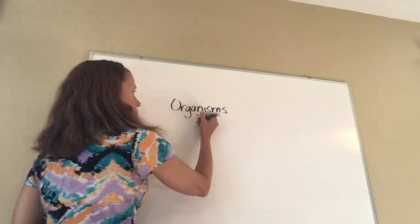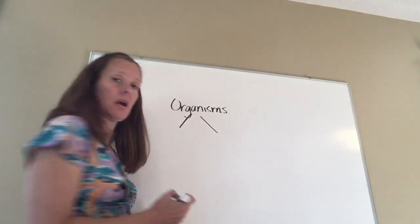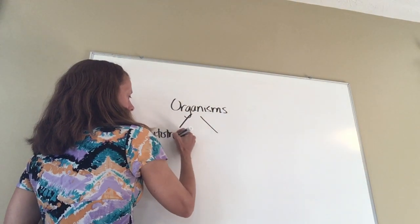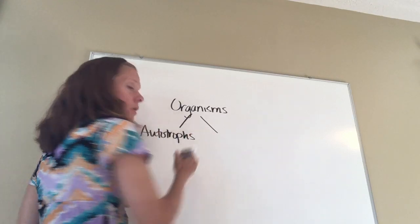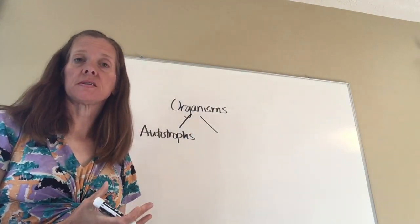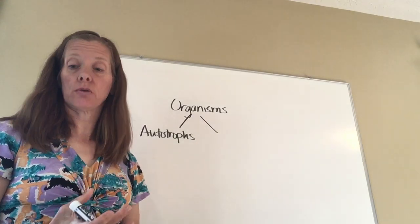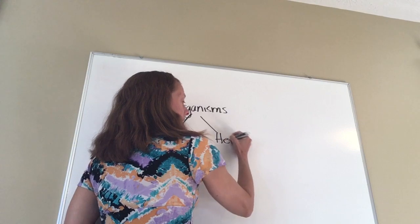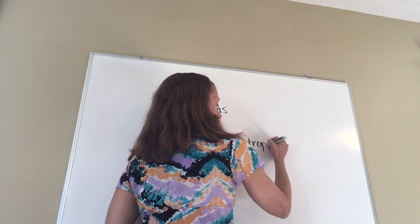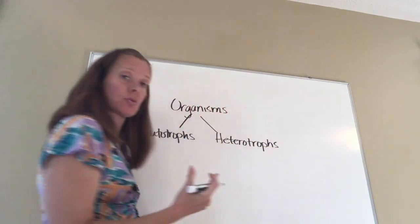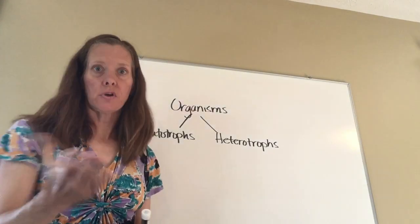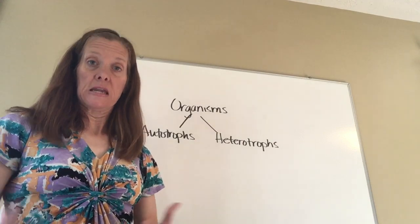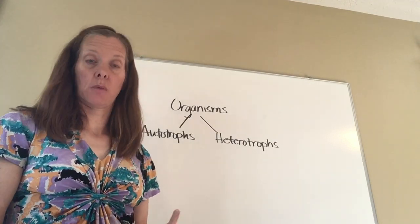Organisms are going to fall into two separate categories. Organisms can either be autotrophs — which means it's an organism that can make its own food, produce its own food — or they're going to be heterotrophs. Heterotrophs are organisms that rely on something else, an outside source, to get their food. You, for example, are a heterotroph because you can't produce your own food; you have to eat food that is either coming from plants or coming from animals.